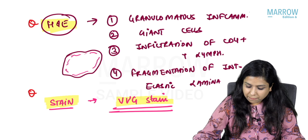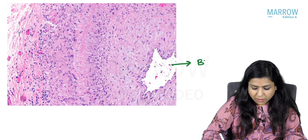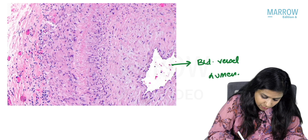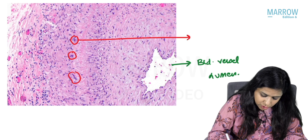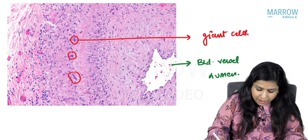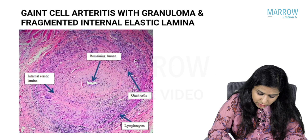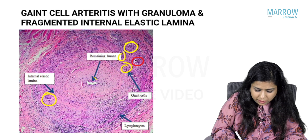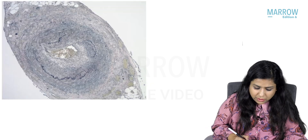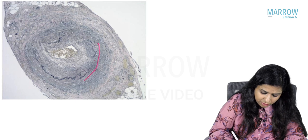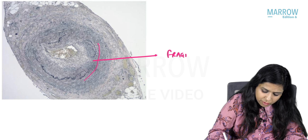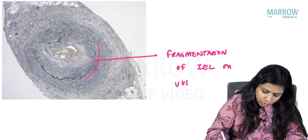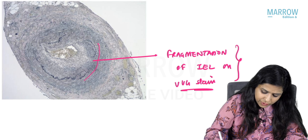Looking at the microscopy images of giant cell arteritis: you can see the blood vessel lumen, and within it the giant cells. In another image, you can see the fragmented internal elastic lamina. On Verhoff-Van Gieson stain, the elastic lamina shows a black color.